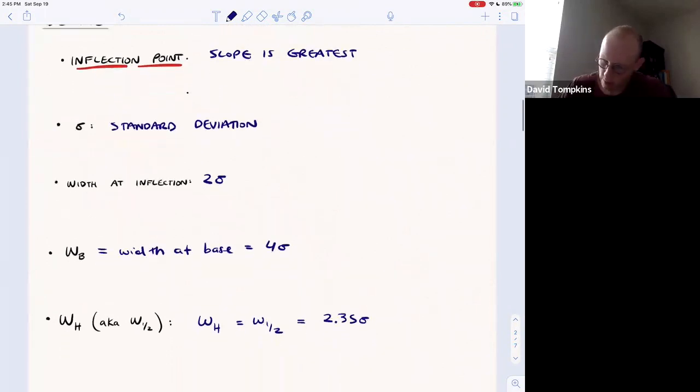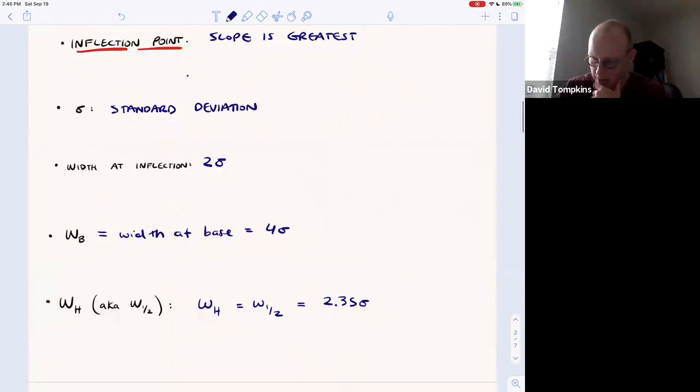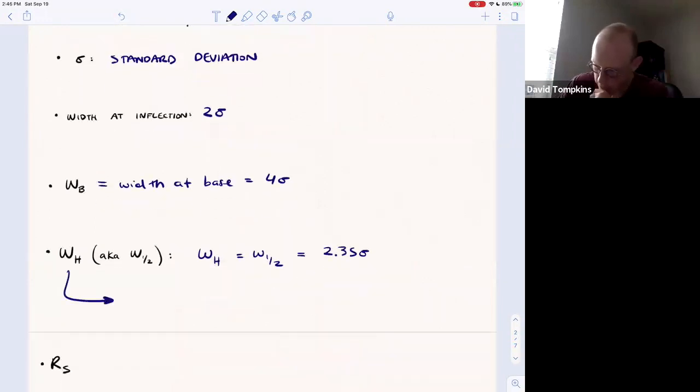And so these two are related to one another, and we'll see some equations in later problem solving where we may have to go back and forth between the two widths and the standard deviation. But just keep in mind the difference between them. This one is width at one half the total height of the peak.